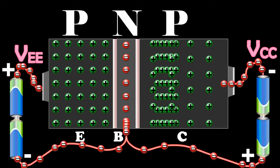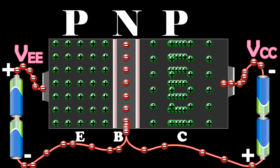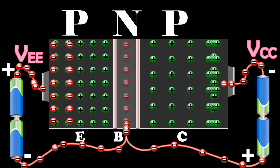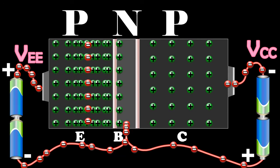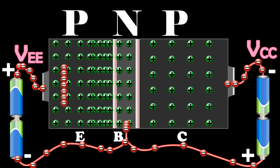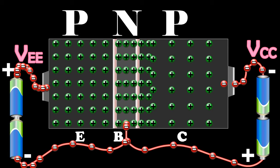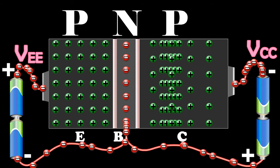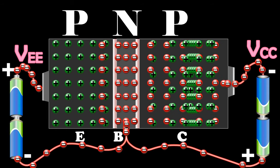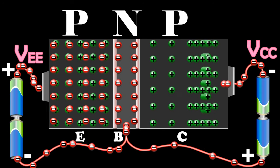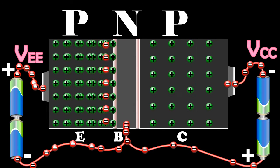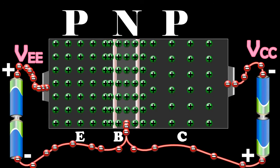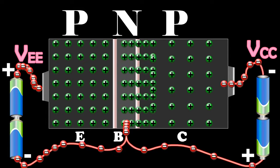The flow of holes from the emitter to the base gives rise to emitter current IE. In the emitter, IE is due to the flow of holes, but in the external circuit the current is due to the flow of electrons from the emitter to the positive terminal of the battery VEE.